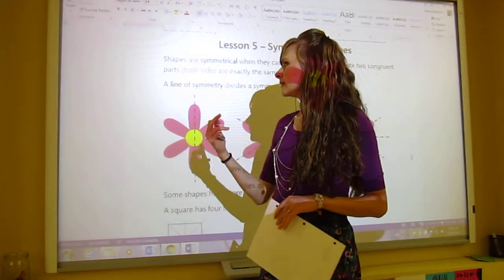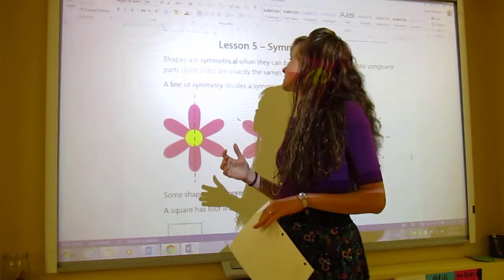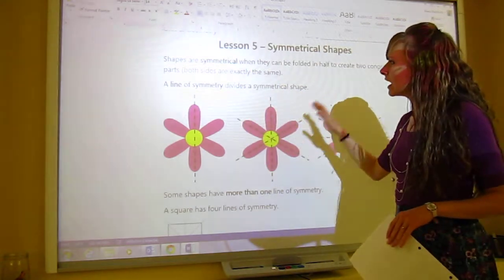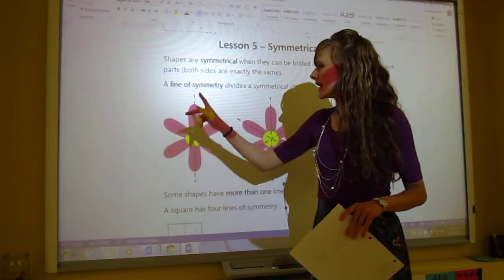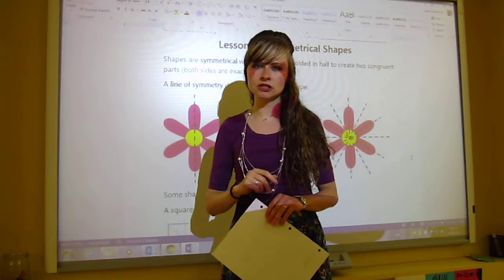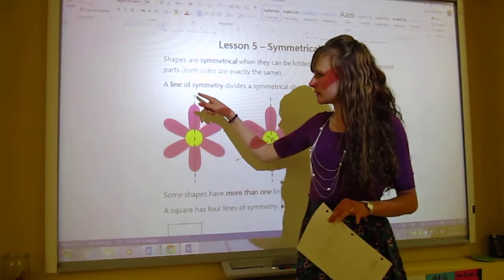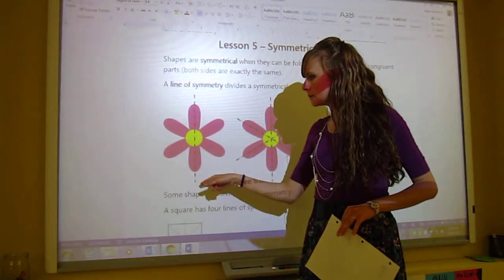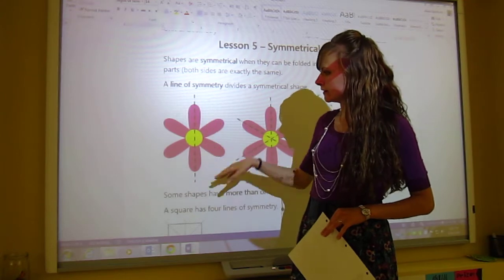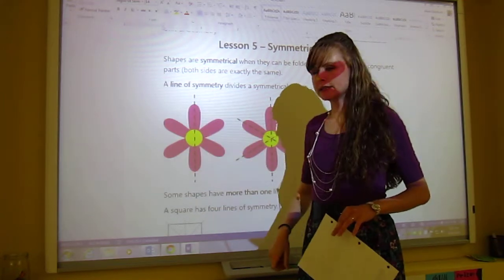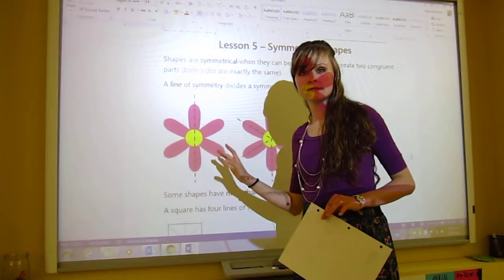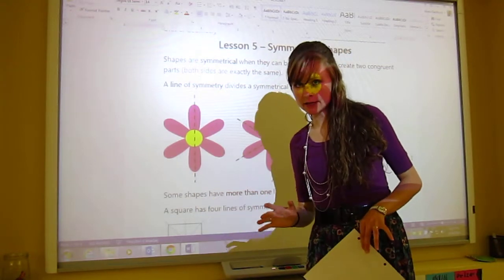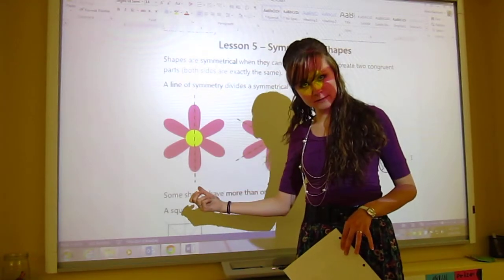Now the second thing that you need to be reminded of is what a line of symmetry is. So a line of symmetry divides a symmetrical shape. So it's that dotted line that goes down the middle of a shape. So on this flower right here, we've got a line of symmetry here and then that divides the flower here and it divides the flower here. If a shape is not symmetrical, it does not have a line of symmetry.